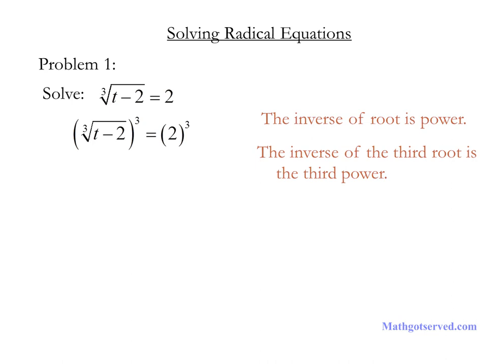On the left side of the equation, the inverse operations neutralize each other — the cube of the cube root cancels out, so you're left with t minus 2. On the right side we have 2 to the third power. We multiply 2 by itself 3 times and get 8. Now we'll simply isolate t by adding 2 to both sides. If we add 2 to both sides, you end up with t equals 10.